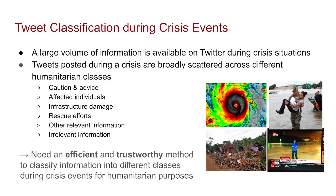During crisis events, a large volume of information is posted on microblogging platforms such as Twitter. Human organizations usually demand information from different classes such as caution and advice, affected individuals, infrastructure damage, and so on. So it's necessary to develop automatic methods to classify tweets into different humanitarian classes. The proposed methods should be both efficient and trustworthy so that they can be trusted by stakeholders and deployed in real-life scenarios.